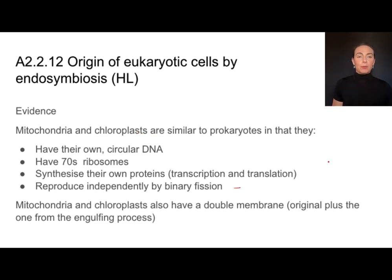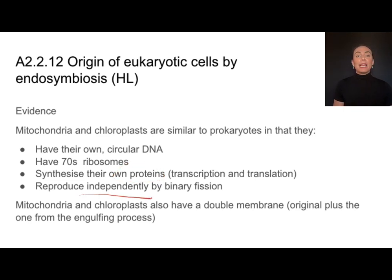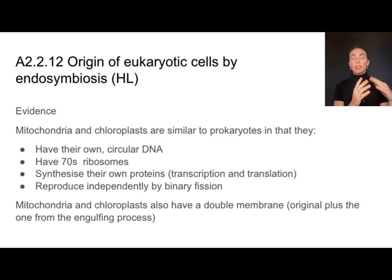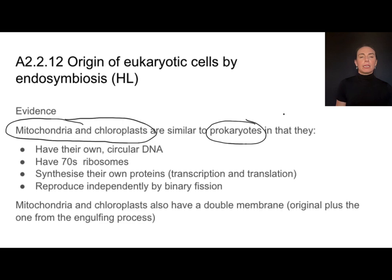Inside a mitochondria and a chloroplast, we're going to find 70S ribosomes, just like prokaryotes — much different than the 80S ribosomes found in the rest of the eukaryotic cell. They synthesize their own proteins and they reproduce independently of the cell. Mitochondria and chloroplasts do their own thing to make new mitochondria and chloroplasts, independent of the rest of the cell. And they use a process called binary fission, which is the same process that prokaryotes use. These are all the ways in which the mitochondria and chloroplasts are very similar to the prokaryotes they came from, so it's important when talking about evidence to link them together.